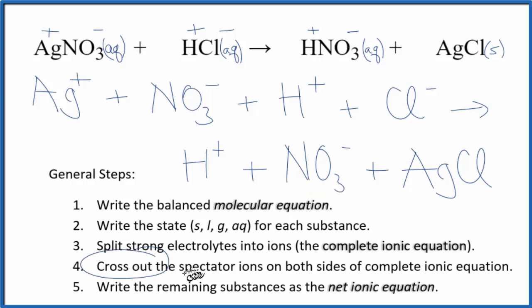Now, we can cross out these spectator ions. They're on both sides of the complete ionic. They really haven't changed. So here in the reactants, we have a nitrate. In the products, we have a nitrate. Cross it out. We have a hydrogen ion, we have one here in the products. Cross it out.